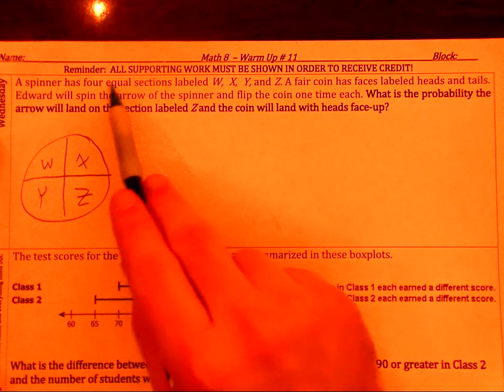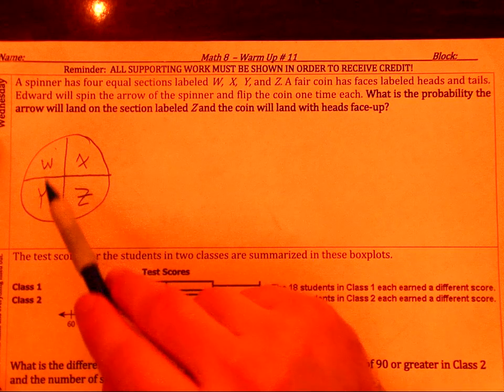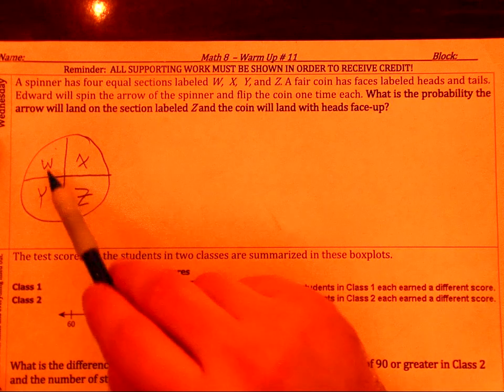Again, equal sections meaning, well, we know each of these is going to be one-fourth.